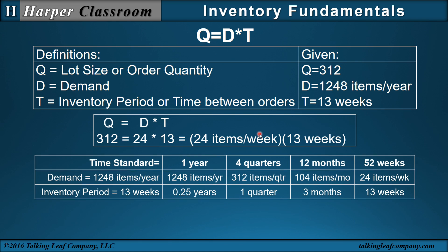Here's where we have time conversions. The time standard used in these videos is: one year is equivalent to four quarters, 12 months, and 52 weeks. So if our demand is 1,248 items per year, we can convert that to quarters by dividing by 4, from years to months by dividing by 12, and from years to weeks by dividing by 52. That's how we got 24 items per week. Or we could have transformed our weeks to years — going from weeks to years, we divide by 52.